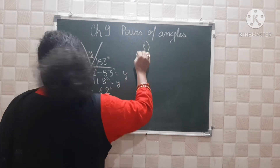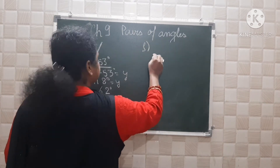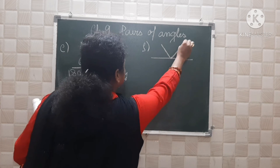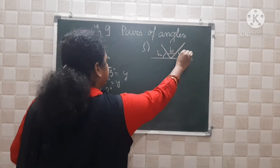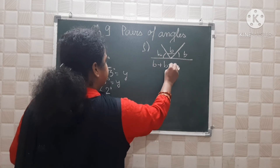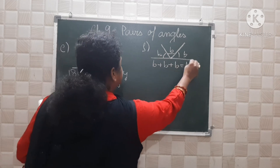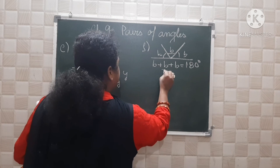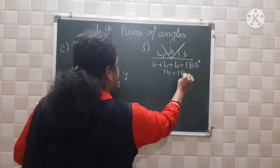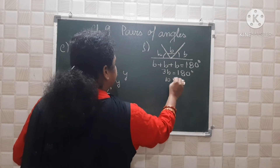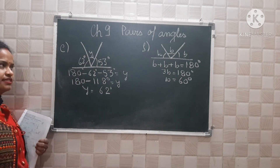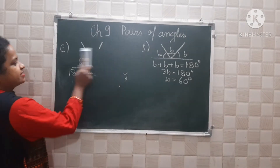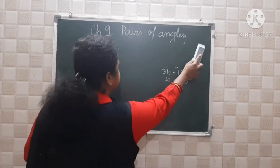For part F, the angles on the straight line are B, B, and B. So B plus B plus B equals 180 degrees, meaning 3B equals 180 degrees and B equals 60 degrees. All three angles are equal at 60 degrees each.